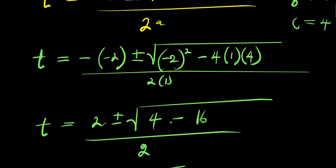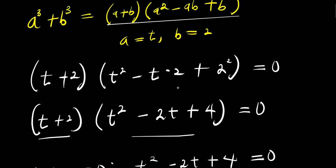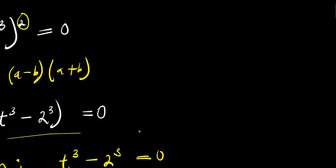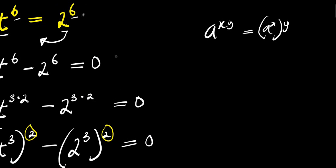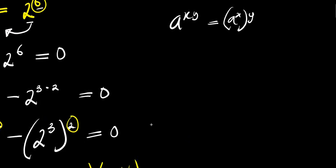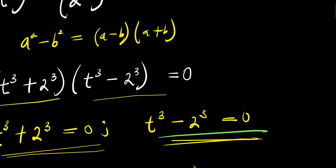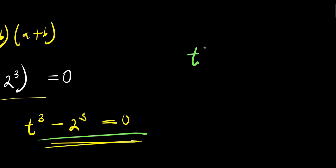Now we need to solve for this other equation for t. Remember, our highest exponent here is 6, meaning that we are going to have 6 different solutions, and we have gotten 3 solutions already. So we need to solve for the other values of t. We are going to consider this other equation: t power 3 minus 2 power 3 equals zero.